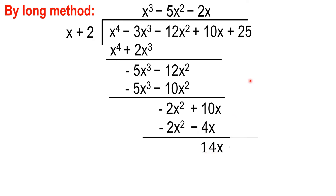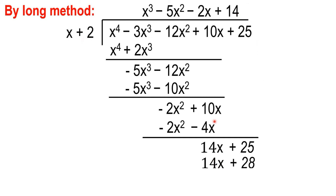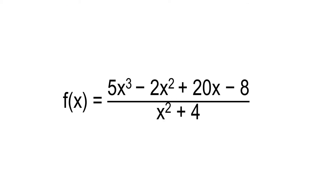Let's bring down the positive 25. So, 14x divided by x is 14. 14 times x is 14x. 14 times 2 is positive 28. Then, as you can see, we have a remainder of negative 3. So, that's how we do the long method division.